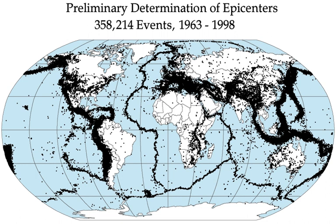It is estimated that around 500,000 earthquakes occur each year, detectable with current instrumentation. About 100,000 of these can be felt. Minor earthquakes occur nearly constantly around the world in places like California and Alaska in the U.S., as well as in El Salvador, Mexico, Guatemala, Chile, Peru, Indonesia, Iran, Pakistan, the Azores in Portugal, Turkey, New Zealand, Greece, Italy, India, Nepal and Japan, but earthquakes can occur almost anywhere, including downstate New York, England, and Australia.